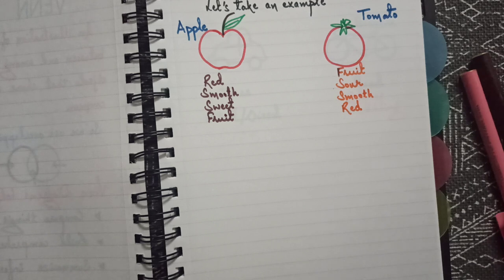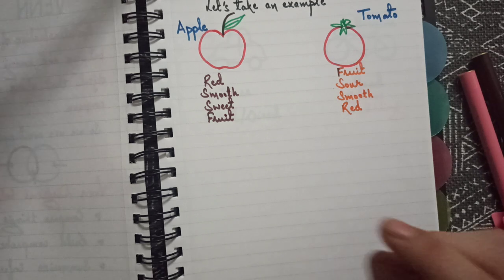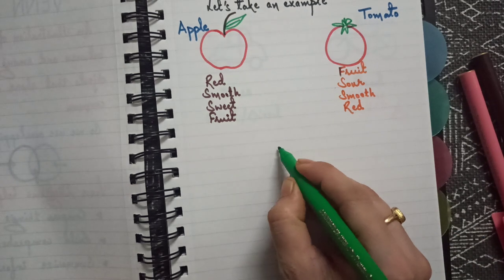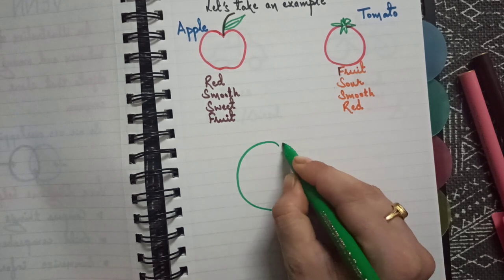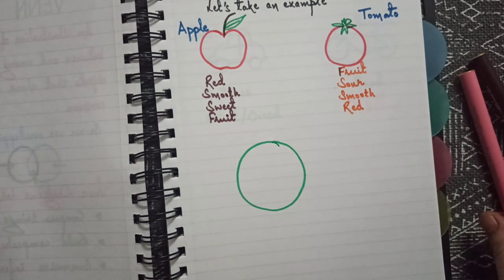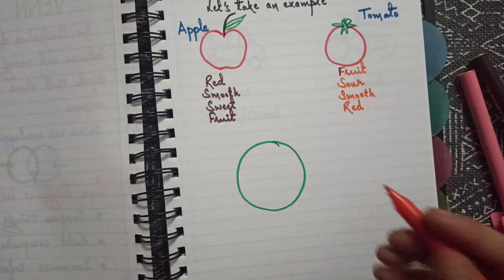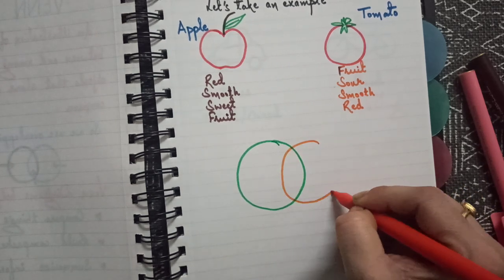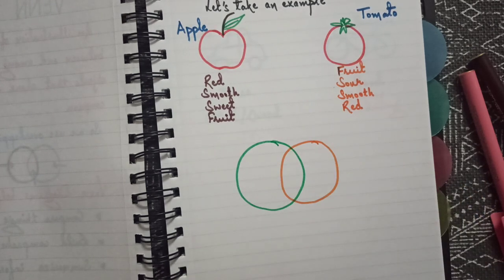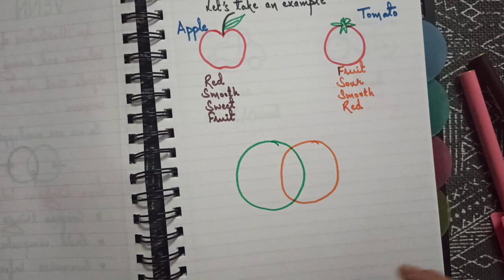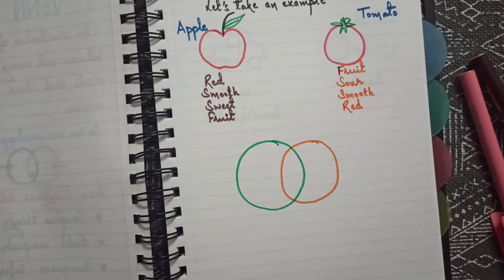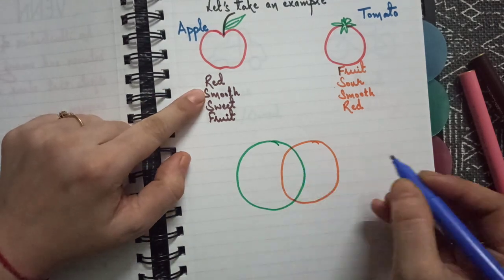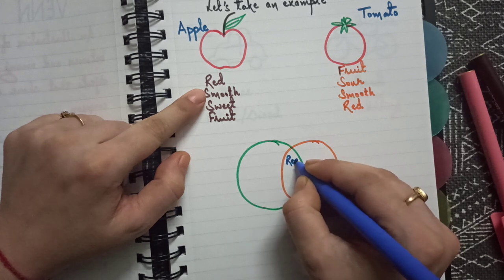Now let's make a Venn diagram. So here we go. This is for apple and this is for tomato.